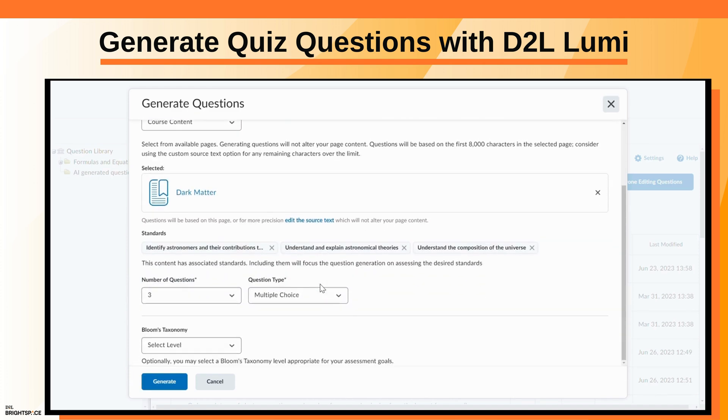Select the number of questions you want to generate and choose the question type. Optionally, select a Bloom's Taxonomy level that aligns with your assessment goals.